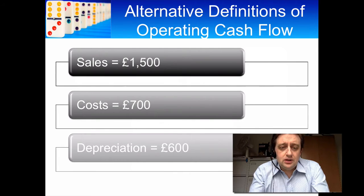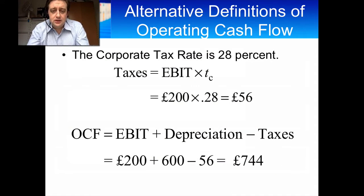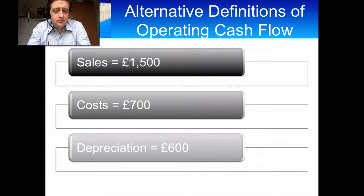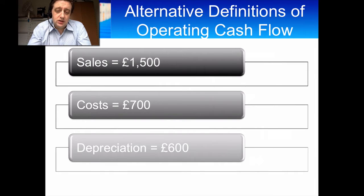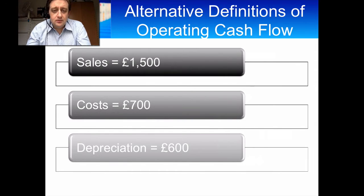So we start off and we can find the net income. The net income is sales minus the costs: 1500 minus 700, that's 800. Then you take away depreciation, so it's 800 minus 600, which is 200 pounds. That's the earnings before taxes.